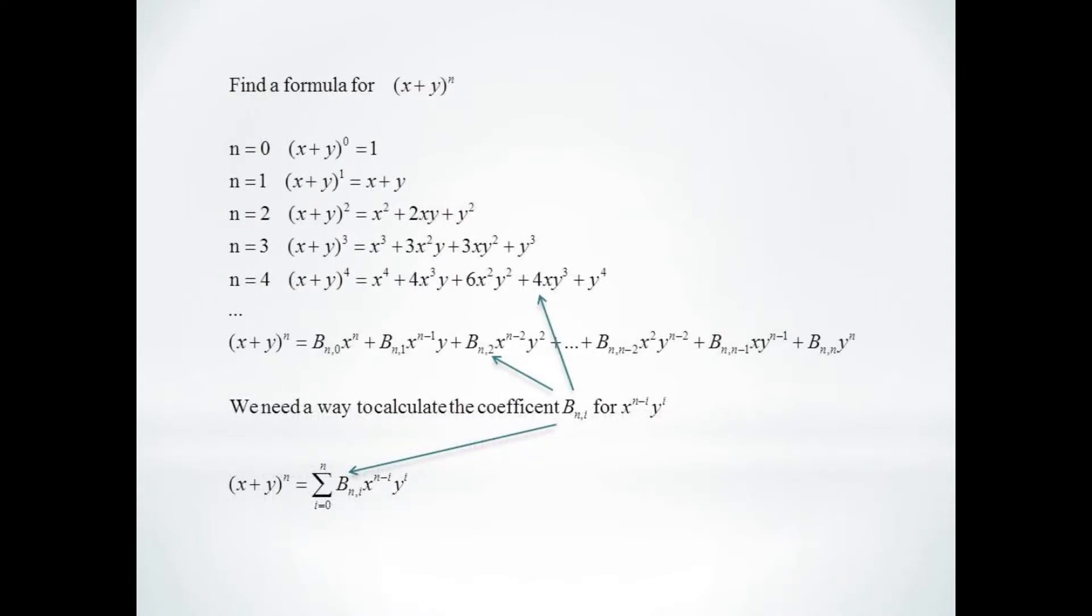So already, if we were given any specific value for n, we could generate the variables for each term of our expansion. The only problem is we really need a formula to find the coefficients.